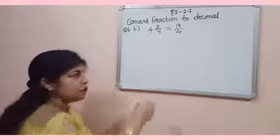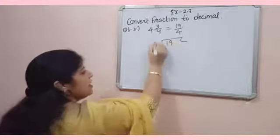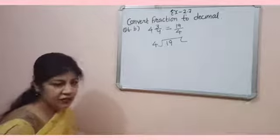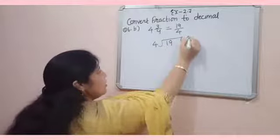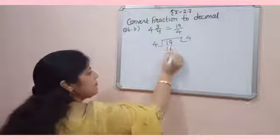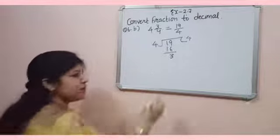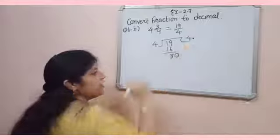So, 19 is numerator, so it will be dividend. And, denominator will be divisor. Now, 19 will be divisible by 4. 16, 4, 9 minus 6, 3. Now, for converting to decimal, you have to write 0 here, and here decimal.